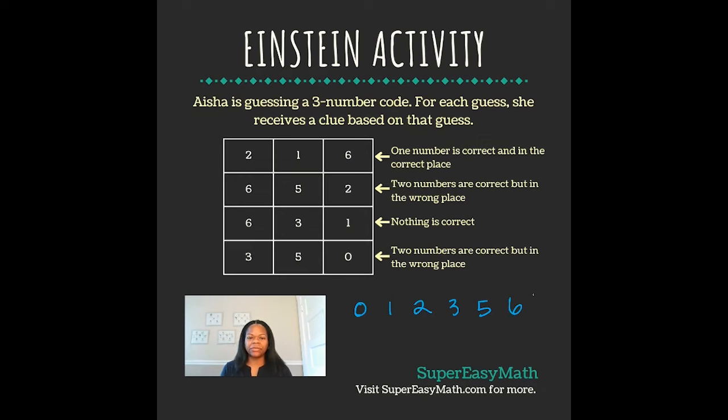Now the clue that stood out to me the most is the third row's clue. So if nothing there is correct, that means none of those numbers are a part of our code. So that means our code does not include a three and our code does not include a one. So because we know we're dealing with a three-digit number code, we already have our numbers just from using that first clue.